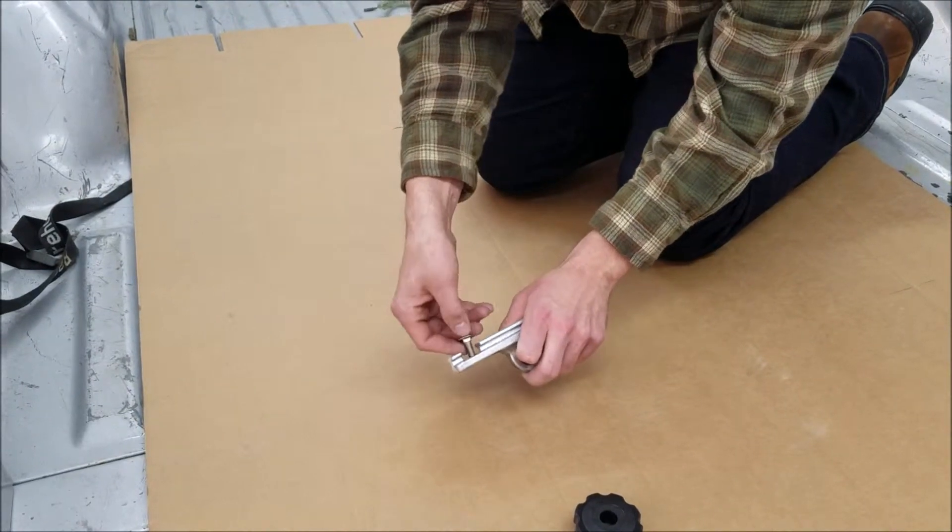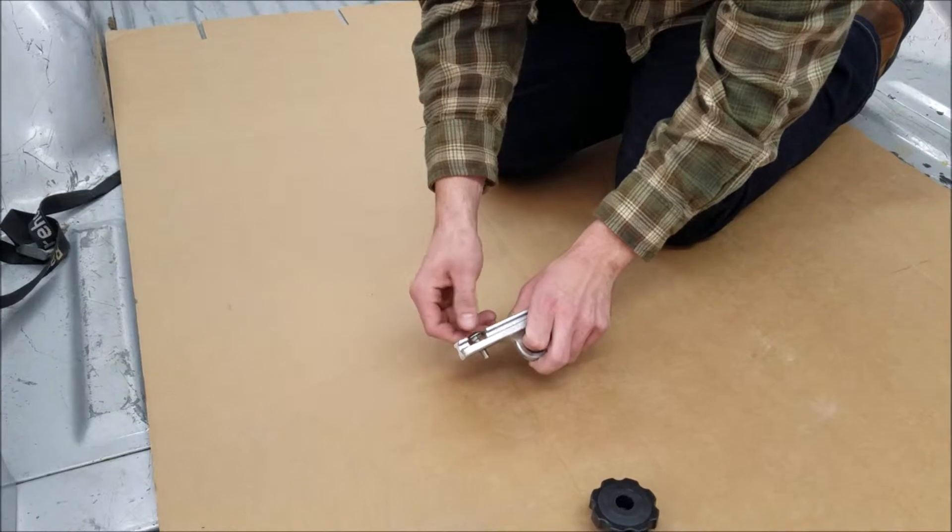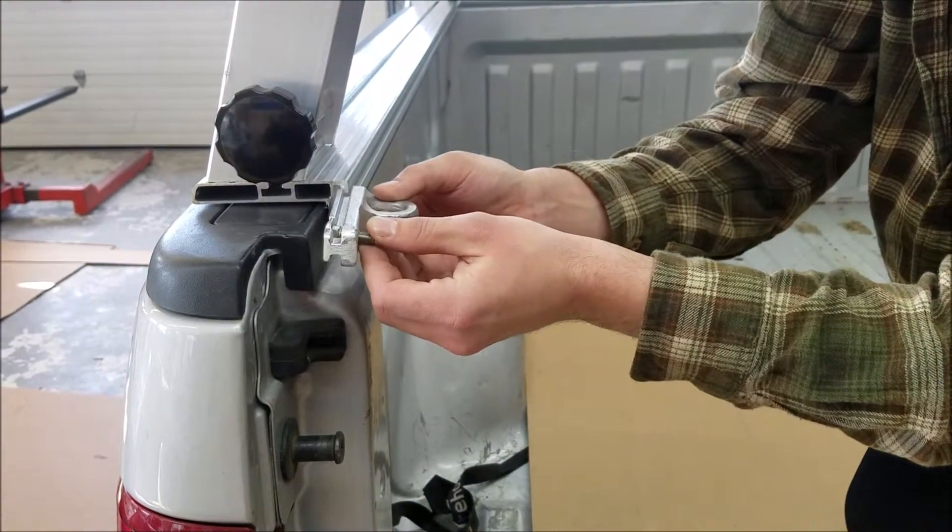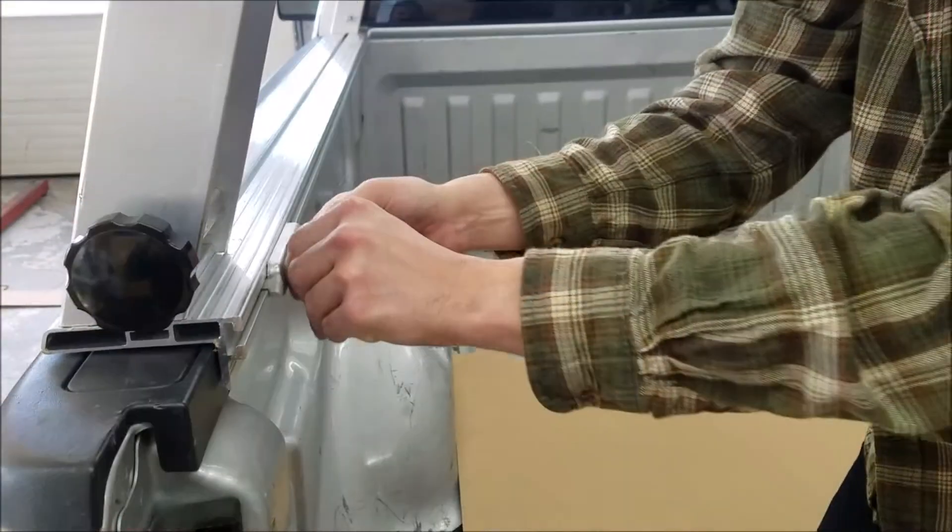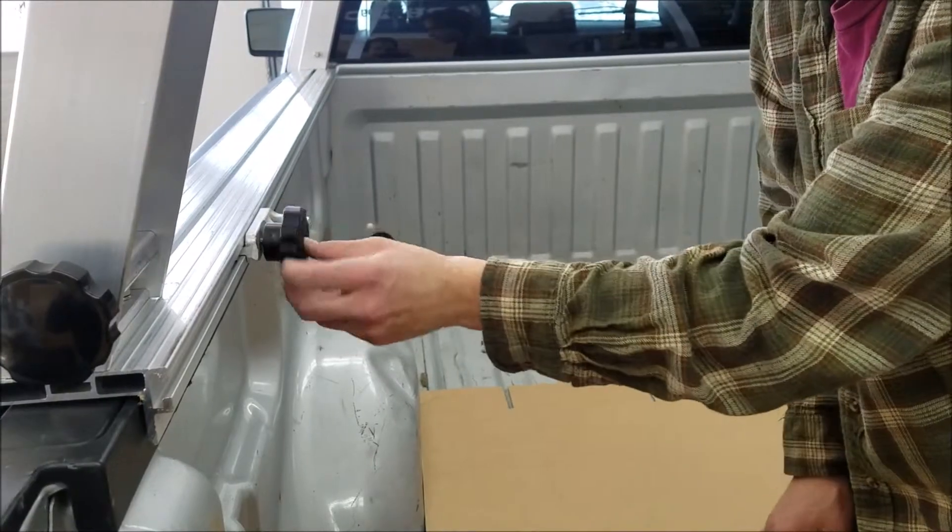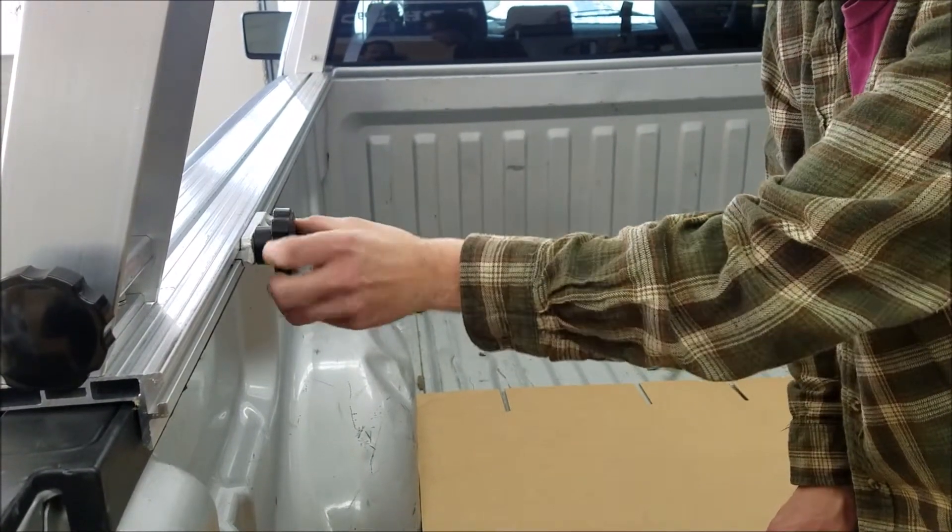To install the cargo anchor, insert a carriage bolt into the cargo anchor hole, then slide the cargo anchor into the slot on the System 1 track. Choose your desired location for the anchor and thread on a knob and tighten down.